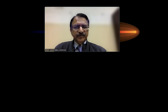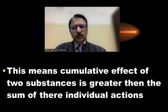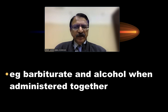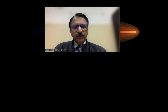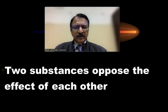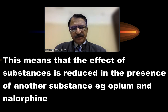Synergism means the cumulative effect of two substances is greater than the sum of their individual actions. When two drugs are given simultaneously, their synergistic effect exceeds individual action — for example, barbiturates and alcohol together cause more harmful effects. Antagonism is when two substances oppose each other; the effect of one is reduced in the presence of another, like opium and nalorphine, where nalorphine is an antidote to opium.